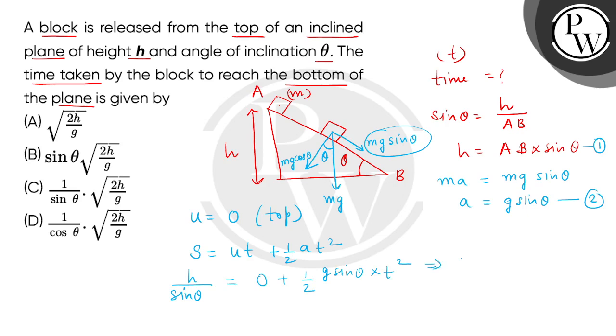So guys, here we have t squared equals to 2h. This cross multiplied because the first one is 0. 2h divided by g sin square theta. Now we have to find only time. We will take the square root. We can see that we will get 1 by sin theta multiplied by square root of 2h divided by g. So the correct answer will be option number C. Thank you.